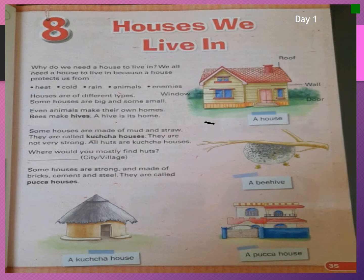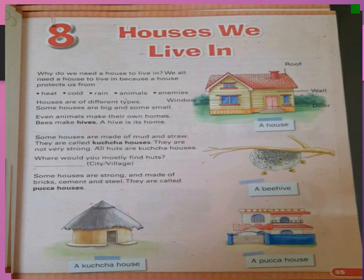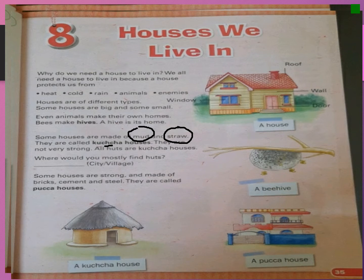Now look at the house here. This house has a roof, wall and a door. Some houses are made of mud and straw — they are called kacha houses. Houses made of mud and straw are called kacha houses. They are not very strong. All huts are kacha houses. You can call a kacha house a hut as well.